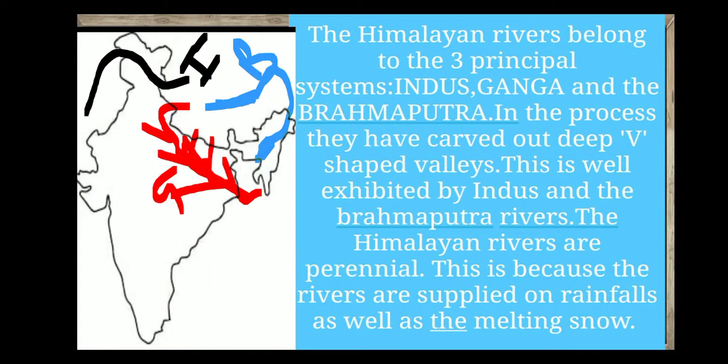The Himalayan Rivers belong to three principal systems: Indus, Ganga, and Brahmaputra. In their course, they have carved out deep V-shaped valleys, as well exhibited by the Indus and Brahmaputra Rivers. The Himalayan Rivers are perennial, meaning they flow 365 days without drying in any season, because they are supplied by both rainfall and melting snow.